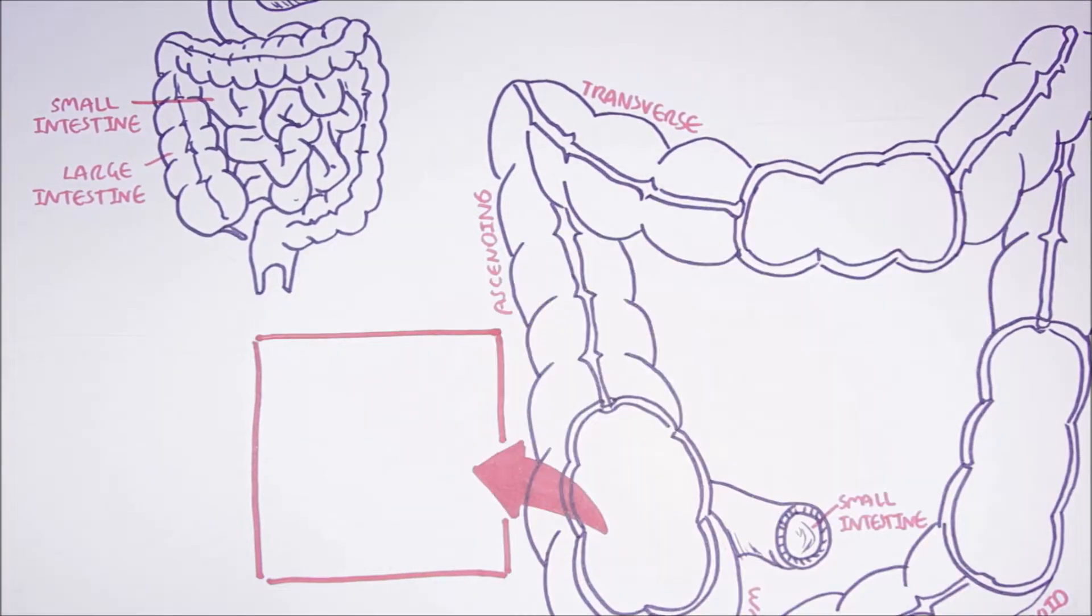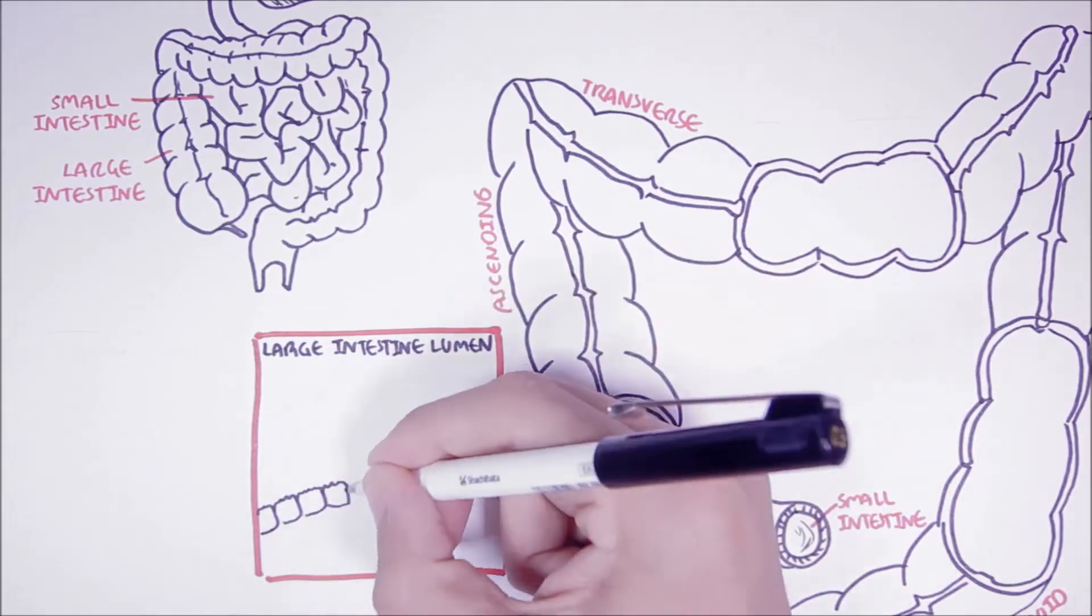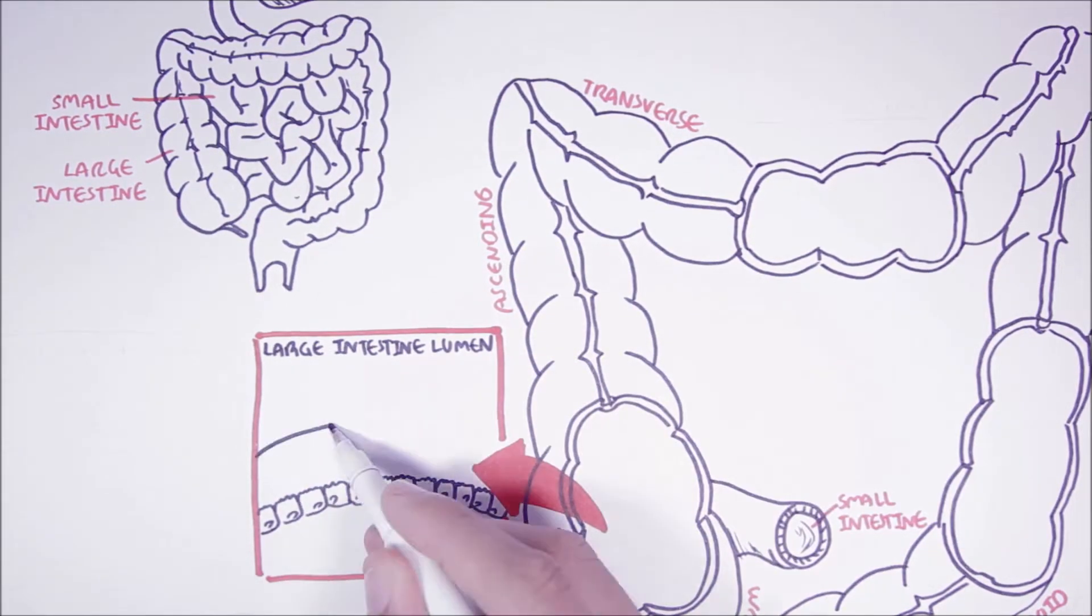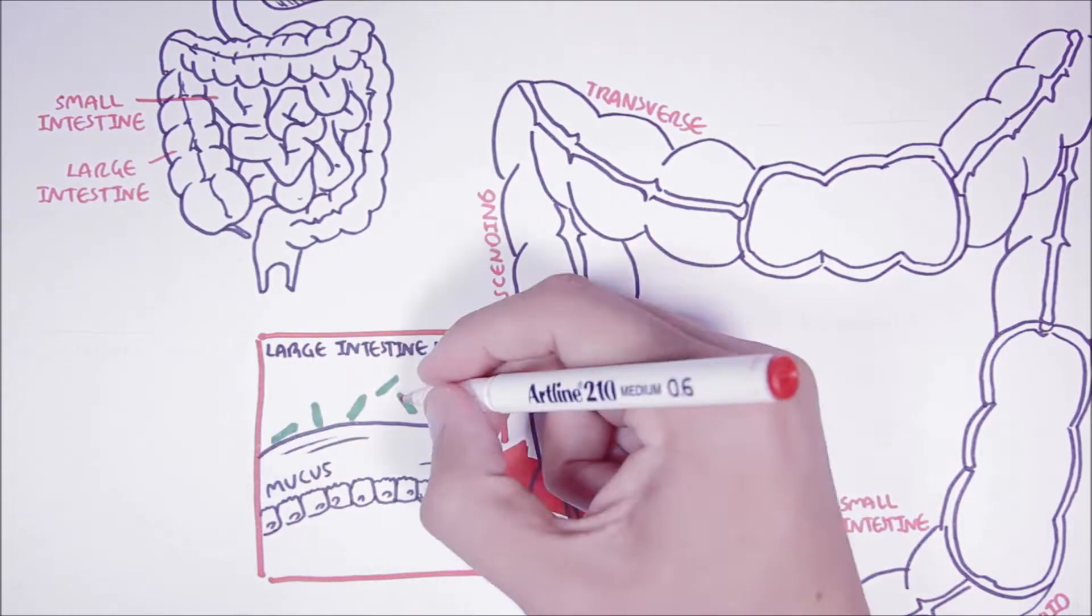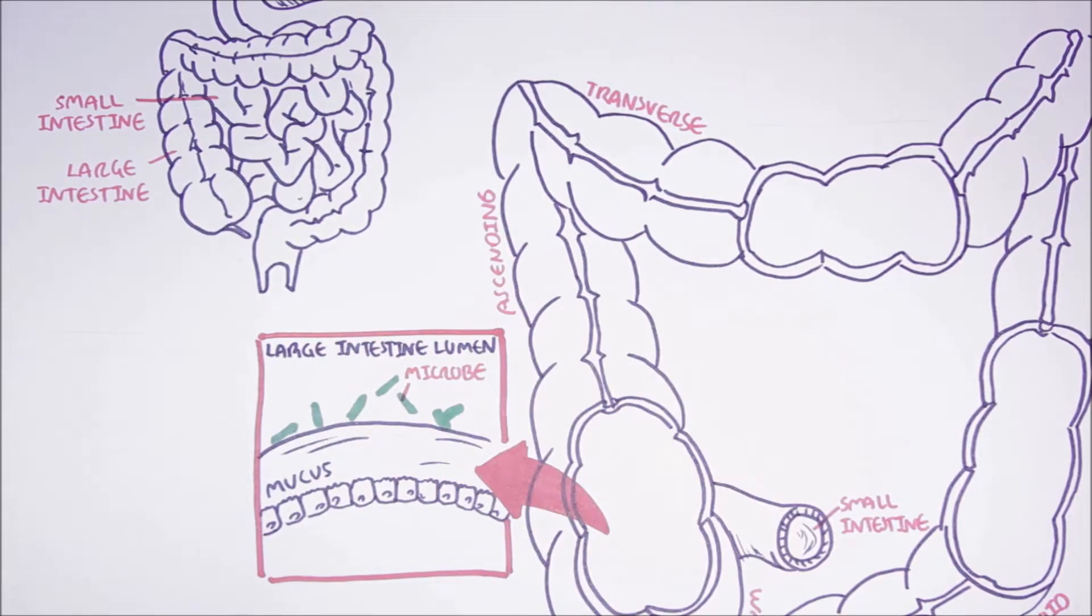So if we zoom into the large intestine here, we have the lumen of the large intestine. And here are the colon cells. Above the colon cells, we have mucus, which acts as a barrier between the microbe community within the lumen and the human cells. The highly dense microbial community and the host intestinal cell linings are separated by a thick layer of mucus in the large intestine.